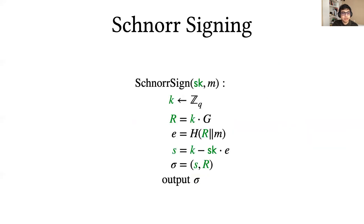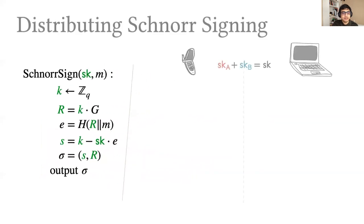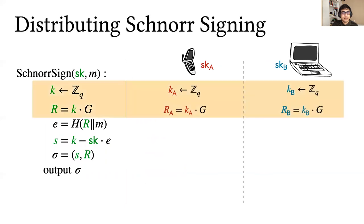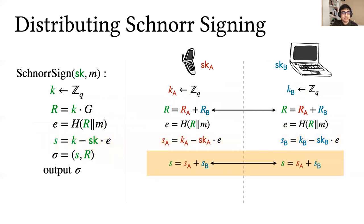A useful property about Schnorr is threshold friendliness. In particular, the signing equation is a linear function of K and SK which is very easy to distribute with most natural secret sharing schemes. For instance, in the two-party setting, we can produce additive shares of the signing key SK, sample additive shares of the instance key K, exchange the corresponding nonces, compute the hash the usual way, and now shares of S can be computed simply locally as a linear combination of shares of K and SK. Exchanging these completes the signature. This can be made maliciously secure quite easily and it also generalizes to N parties.